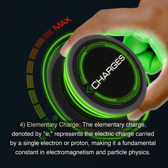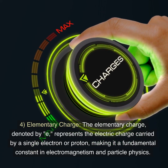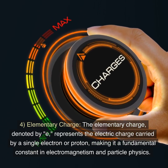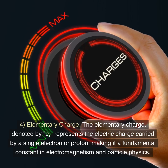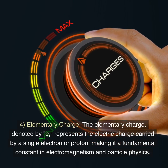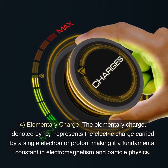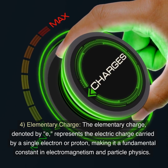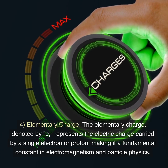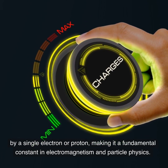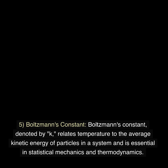4. Elementary charge. The elementary charge, denoted by E, represents the electric charge carried by a single electron or proton, making it a fundamental constant in electromagnetism and particle physics.